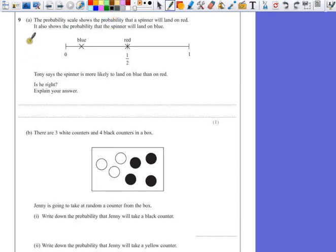Question 9, part A. The probability scale shows the probability that a spinner will land on red. It also shows the probability that the spinner will land on blue.